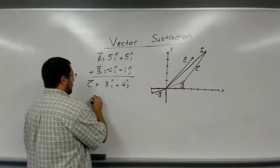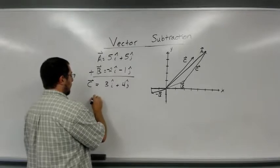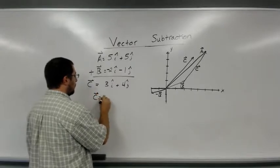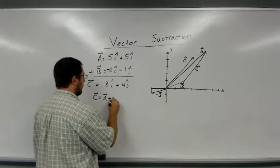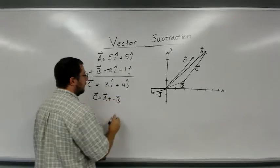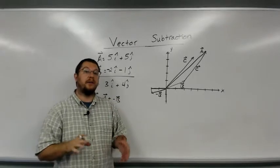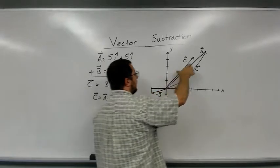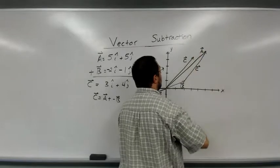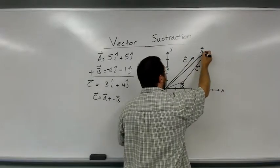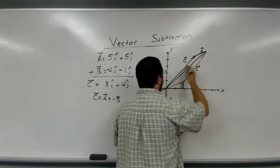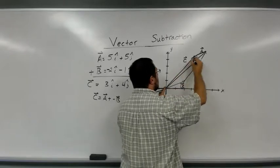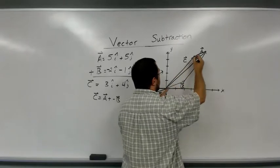And so another way of doing this is saying c is equal to a plus negative b. And now if I do the tip-to-tail method, if I displace b and move it from a, the new tip is right here, and I would draw c from the origin to my new tip here.